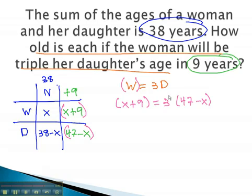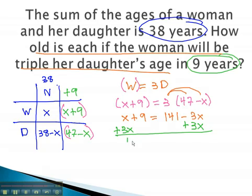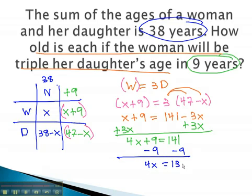We can solve this equation by distributing x plus 9 equals 141 minus 3x. Moving the variable to one side by adding 3x, 4x plus 9 equals 141. Subtracting 9 from both sides, 4x equals 132. And finally, dividing both sides by 4. x is equal to 33.